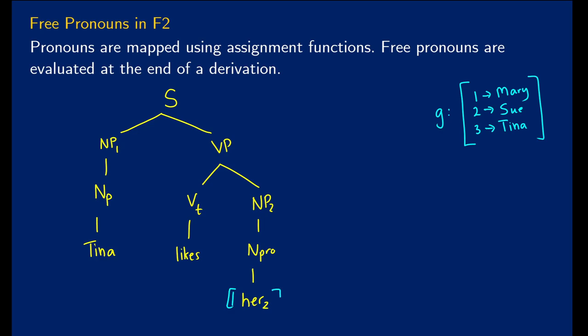So her, when we take the value of her, we're just going to get the assignment function applied to her₂. And the same thing is going to continue up the chain up till we get to the NP. So I'll just write this in for both of these G of her₂. This is also G of her₂.